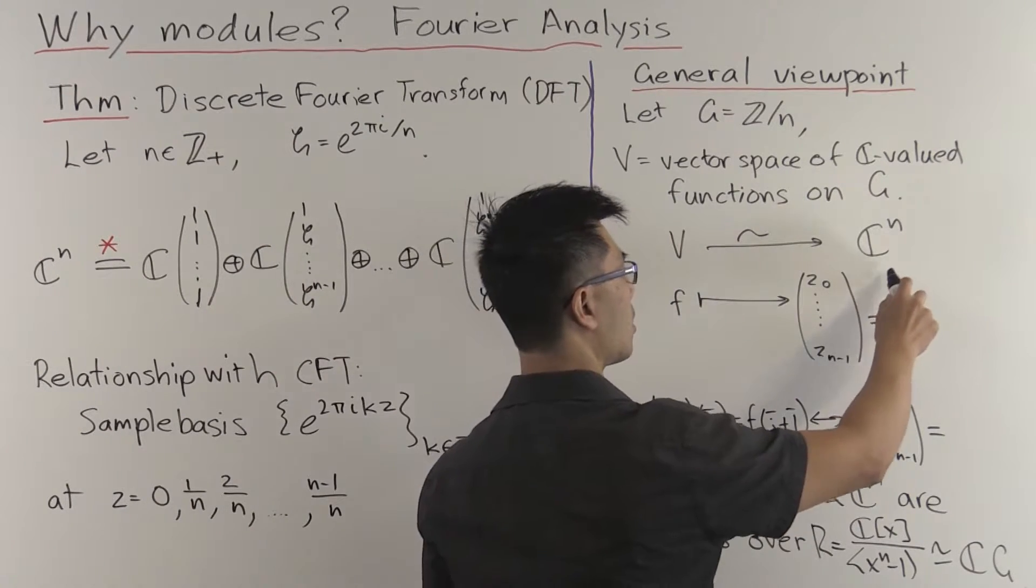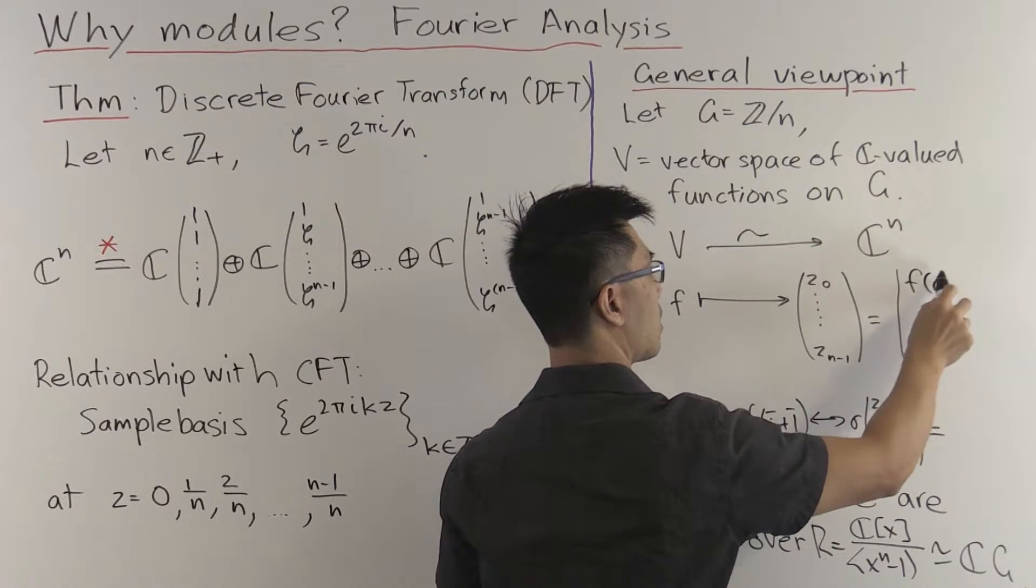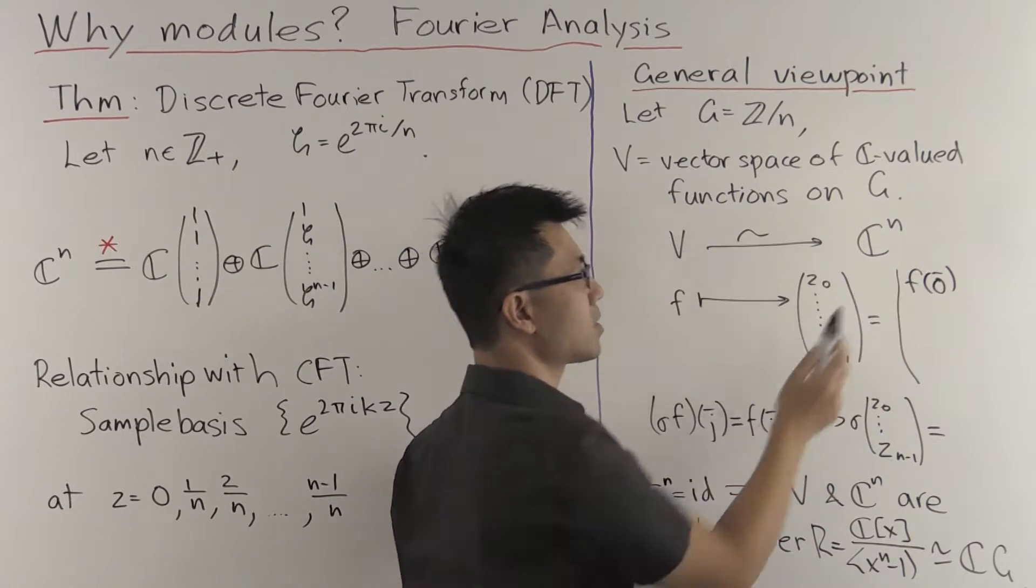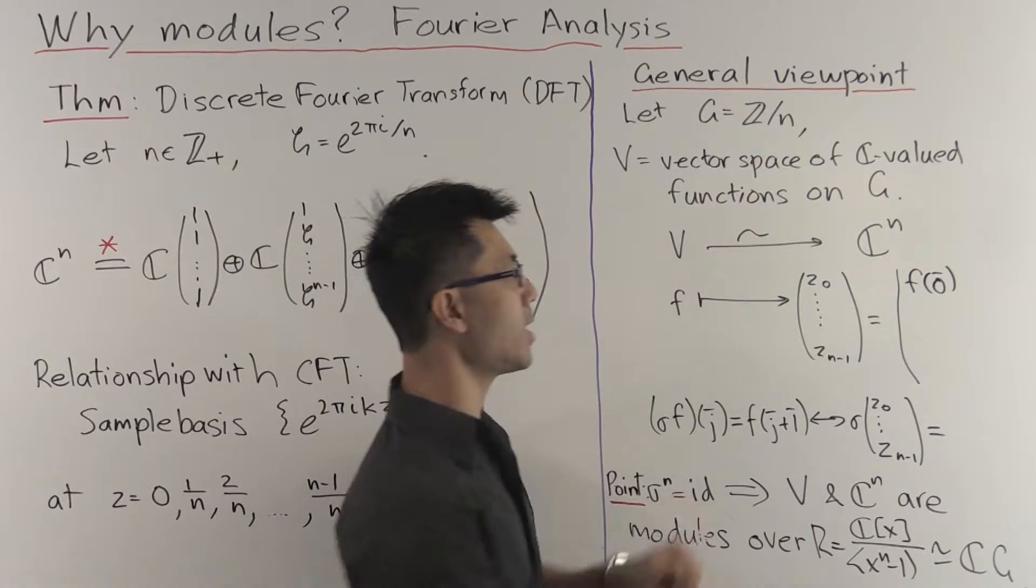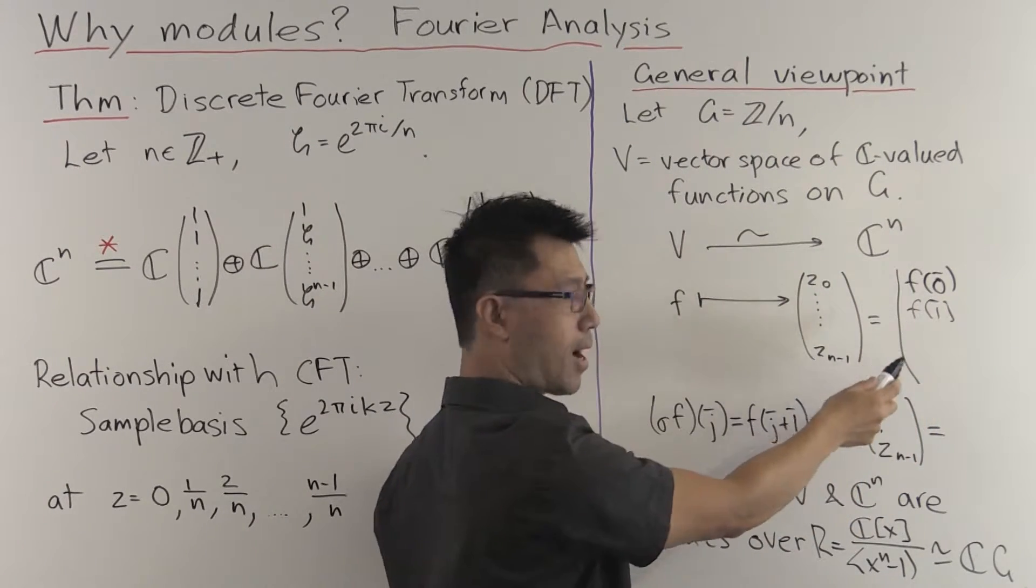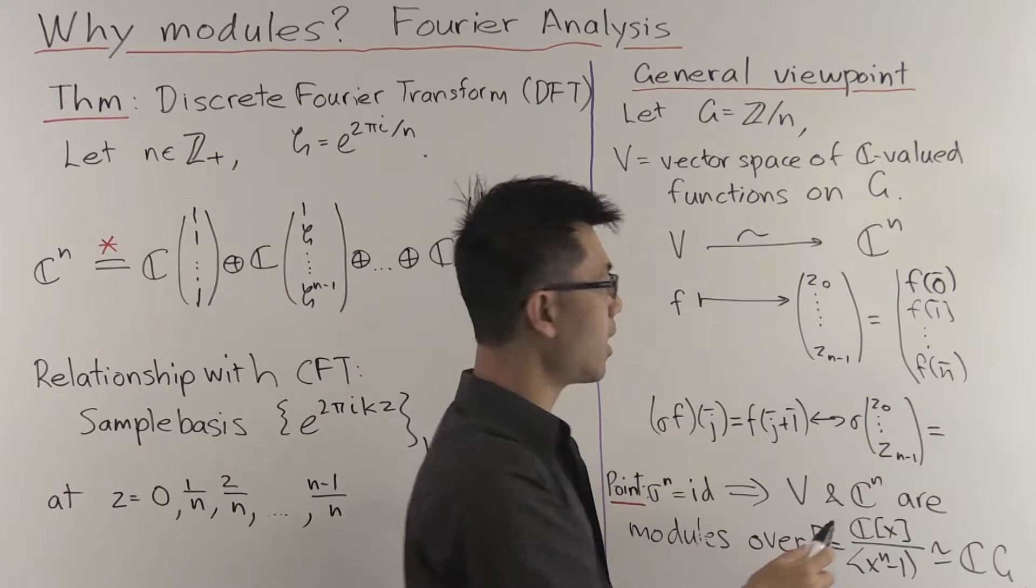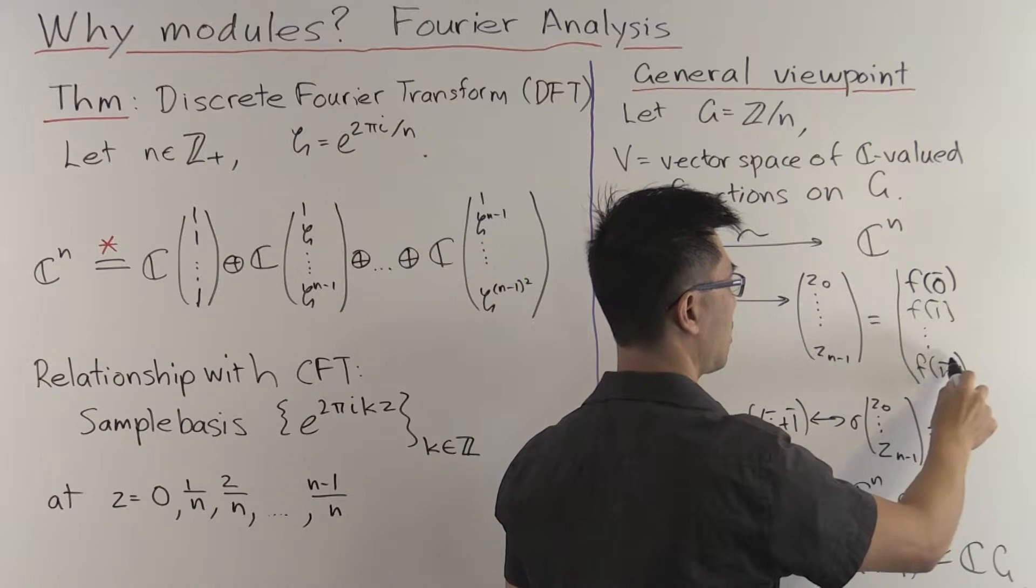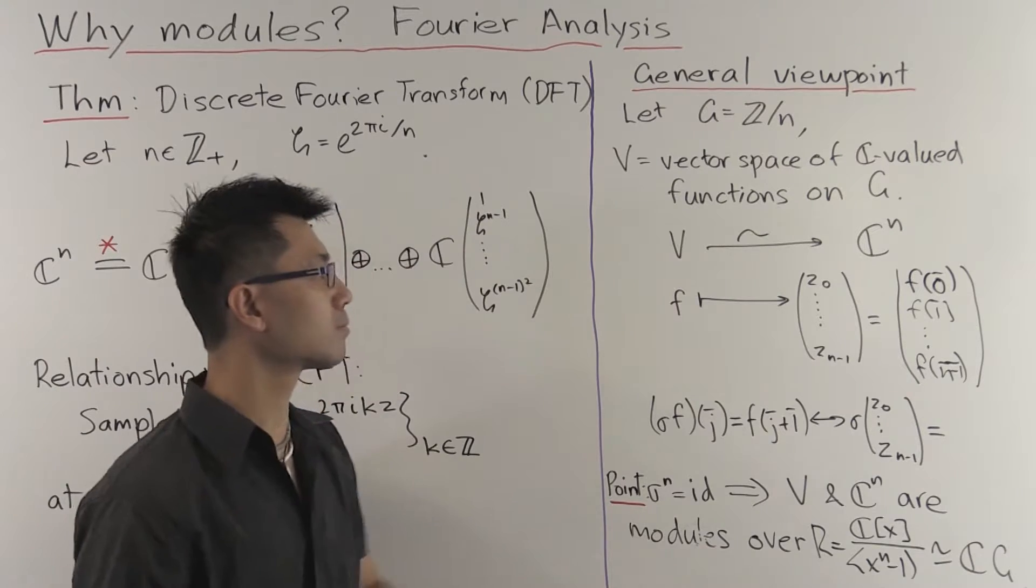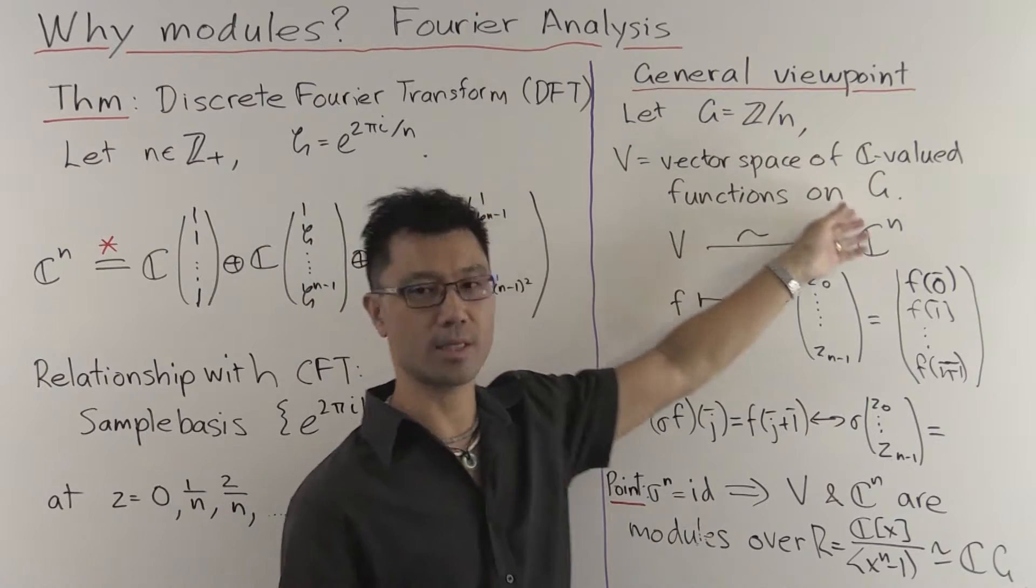So for example, you can send f to just f(0̄), the first value where 0̄ is the residue of 0 mod n, f(1̄), all the way down to f((n-1)̄). And that gives you your isomorphism between V and C^n.